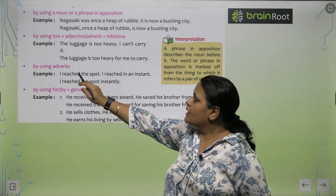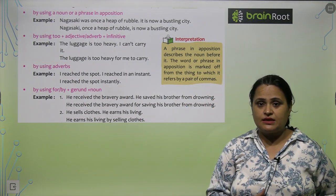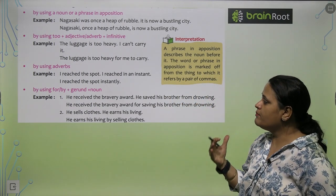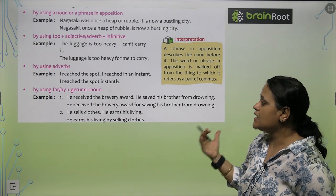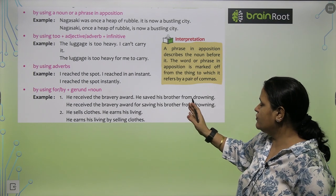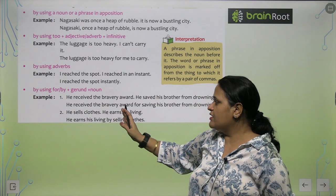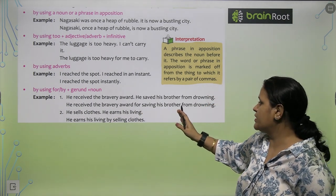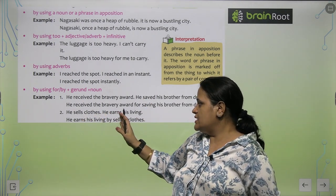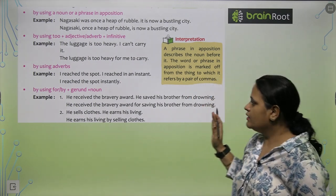By using adverbs — 'I reached the spot. I reached in an instant.' Combined: 'I reached the spot instantly.' By using 'for' or 'by + gerund' — 'He received the bravery award. He saved his brother from drowning.' Combined: 'He received the bravery award for saving his brother from drowning.' Also: 'He sells clothes. He earns his living.' Combined: 'He earns his living by selling clothes.'